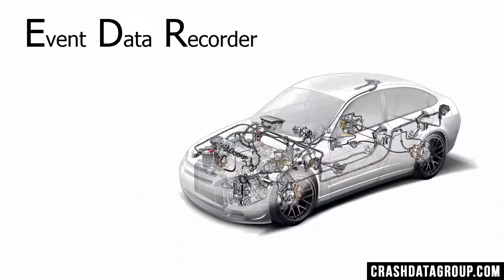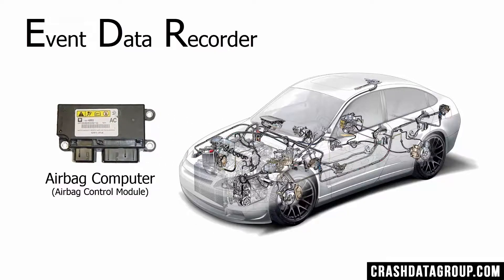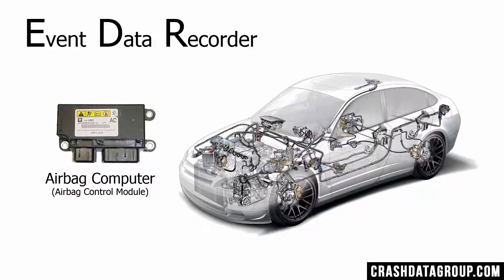EDR stands for Event Data Recorder. EDRs are part of a vehicle's airbag computer that's installed in a vehicle during the assembly process. EDRs are sometimes referred to as the black box of an automobile. The airbag computer's main purpose is to tell the car exactly when to deploy an airbag when a crash occurs. To do that, the airbag computer needs to gather lots of information about what the vehicle is doing in real-time — things like vehicle speed, brake status, etc. Much of that information is recorded to the EDR when a crash occurs.